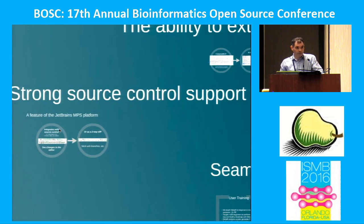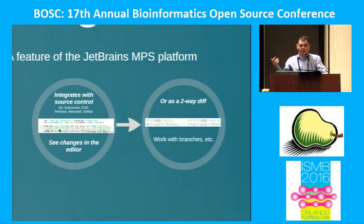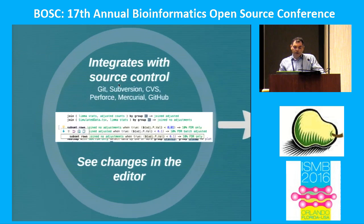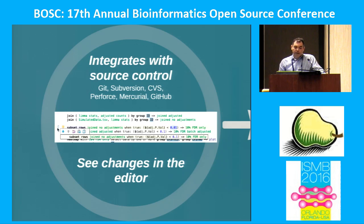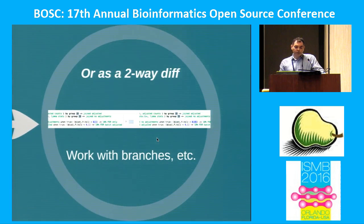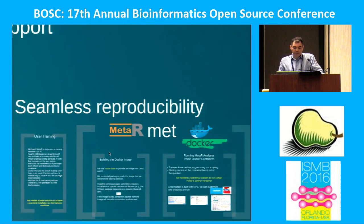The user interface definition uses a language in MPS to express editors, and that's all it takes to write a simple editor — a seamless composition mechanism. Now let me tell you about source control support, which is very important for reproducibility. This is a feature of the JetBrains MPS platform — we don't have to do anything special; it's built in for any language you develop on the platform. For example, I changed a filter threshold from 0.1 to 0.01; in the margin users see a bar, and clicking it shows the diff. A two-way diff is also available for more extensive branch changes.